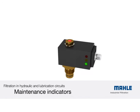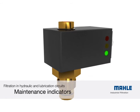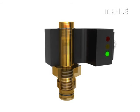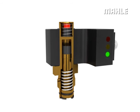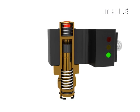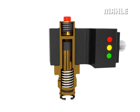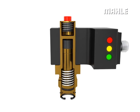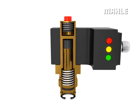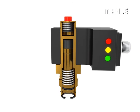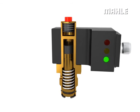Maintenance indicators enable the most cost-effective use of filter elements. When a filter element has been utilized to full capacity, the differential pressure increases. This increased pressure triggers a piston movement, which is then converted into an optical as well as an electrical signal.